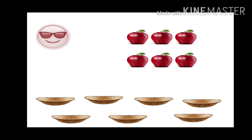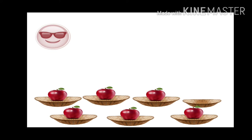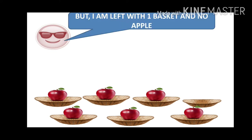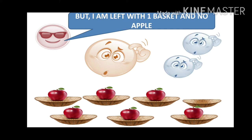Now it's the turn of roll number 7. He has 7 baskets, but the problem is there are only 6 apples but 7 baskets. So 1 basket is left out and there are no apples to fill it — he could not do it. By the same reasoning, roll number 8 and roll number 9 are also in a problem because they have even more baskets. So these three also could not do it.